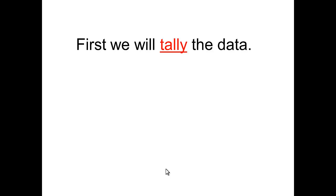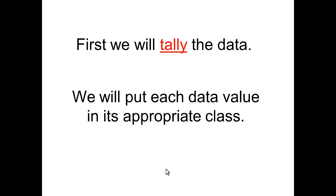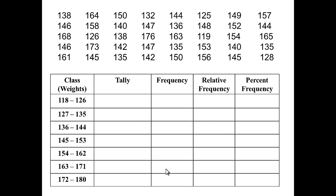Next we will tally the data — each data value will fall into one of the appropriate classes. The easiest way to count is to place a tally mark for each data value. Looking at 138, it falls between 136 and 144, so it is in the third class and we'll place a tally mark there.